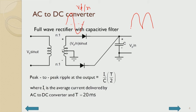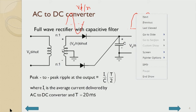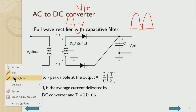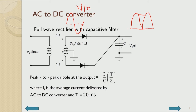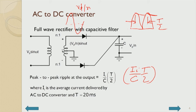With no capacitor and just the load, we get the full-wave rectified waveform. Because of the capacitor, the waveform decays almost linearly. If the load current is I, then I/C is the rate of decay, and within a half-period T/2 the voltage drops by a certain amount — that is the peak-to-peak ripple at 100 Hz.